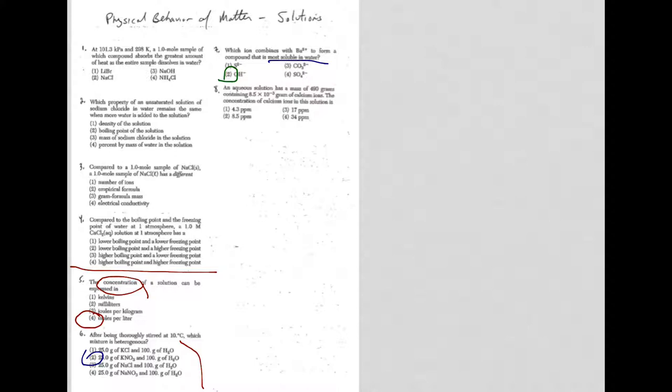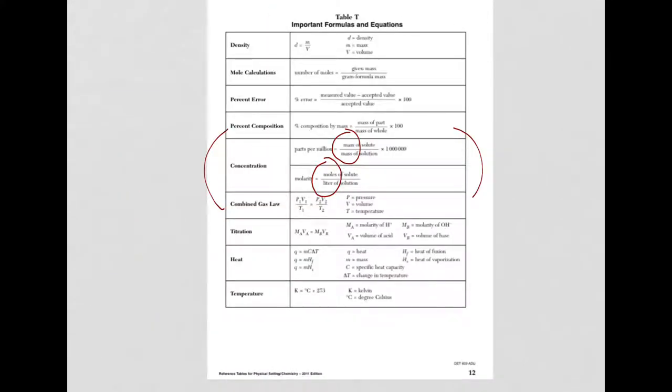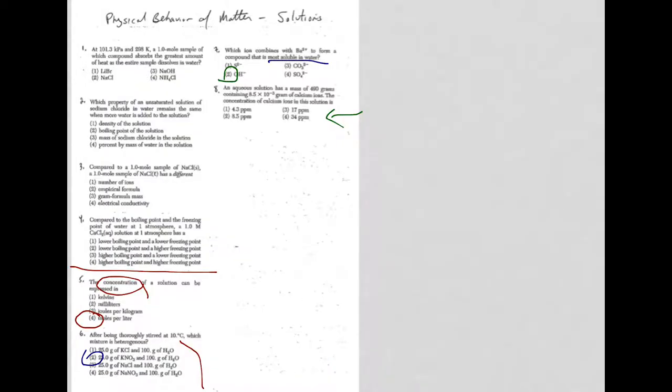Finally, question 8. We're dealing with an aqueous solution with a mass of 490 grams containing 8.5 times 10 to the minus 3 grams of calcium atoms. We need to calculate parts per million. I need to go to reference table T. Here is my parts per million equation: mass of solute over mass of solution times a million.